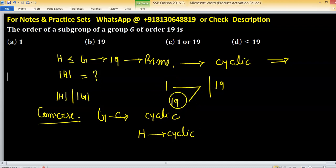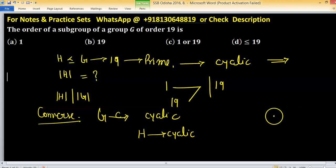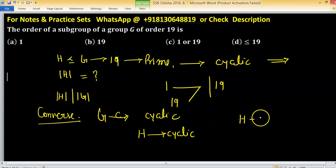19 is a prime number and it has only two divisors: 1 and 19 itself. So the subgroup order will be either 1 or 19.